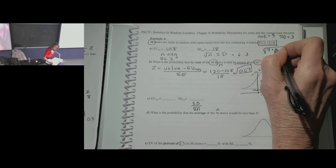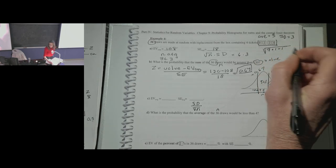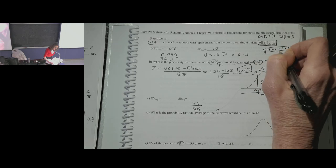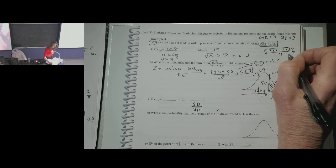You can see 3 squared is 9, plus 1 squared, plus 1 squared, plus 5 squared — that's 25. So we have 9 plus 1 plus 1 plus 25 over 4, which is 36 over 4. The square root of 9 is 3. That's how we get the standard deviation of 3. We couldn't use the shortcut formula because there aren't just two types of tickets.